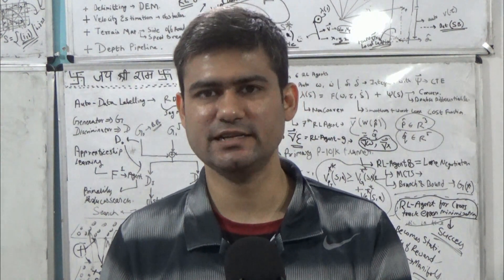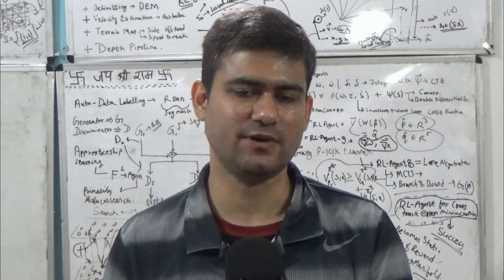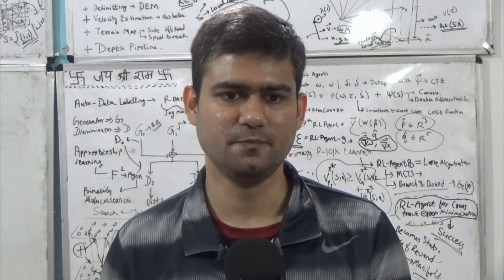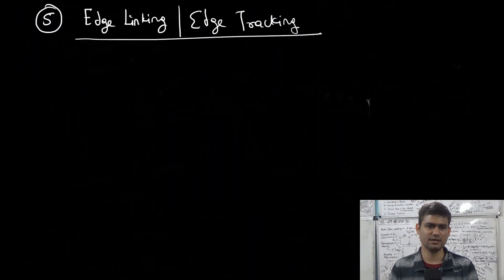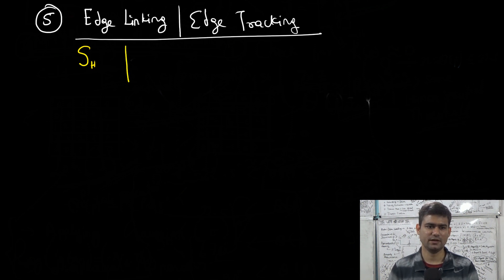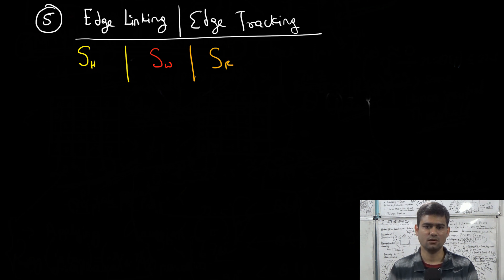Having discussed the fourth step of the Canny edge detector algorithm, now we can discuss the final step — the edge linking or edge tracking step. Recall that we divided the edges into three different sets: SH, the set of all pixel coordinates with strong edge points; SW, the set of all weak edge points; and SR, all the rejected edge points — the points that are rejected directly from being an edge point in the resultant image.